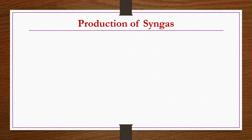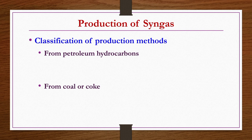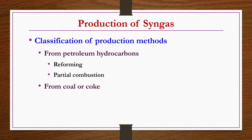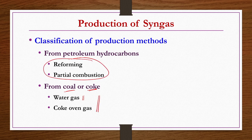Next is production of syngas. Classification of production methods: from petroleum hydrocarbons — by reforming or partial combustion; from coal and coke — water gas and coke oven gas. The distinction between syngas and water gas is: if CO and H2 is produced from coal and coke, it is called water gas; if the same CO and H2 mixture is produced from hydrocarbons or naphtha, it is called syngas. We will now see syngas production from hydrocarbons by reforming and partial combustion methods.